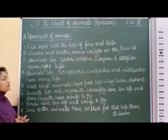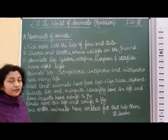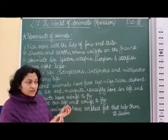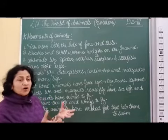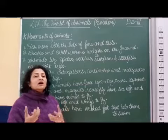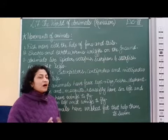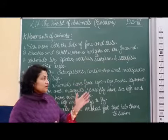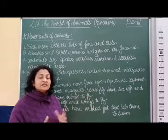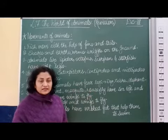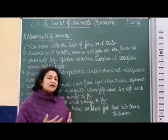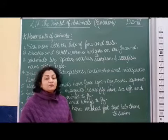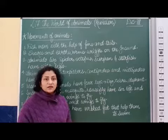Most land animals have four legs. If we talk about a dog, a goat, a cow, a buffalo, a zebra, elephants, lions, tigers — they are all land animals. Most land animals have four legs which help them to move from one place to another.